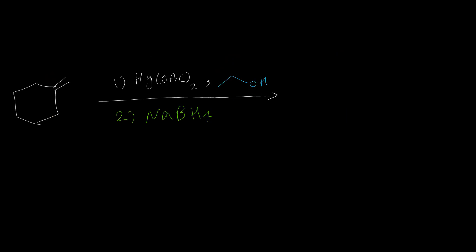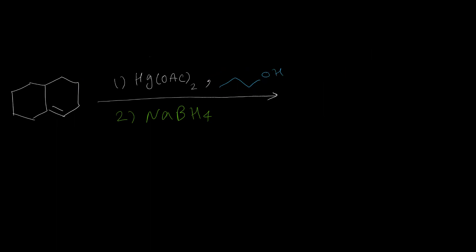Here we have a primary carbon and here a tertiary carbon, so the OR group should attach to the tertiary carbon — oxygen with a 3-carbon chain — and the primary carbon should have hydrogen. In the last example, this carbon is secondary and this carbon is tertiary, so the OR group attaches to the tertiary carbon — oxygen with a 3-carbon chain — and the secondary carbon should have hydrogen.